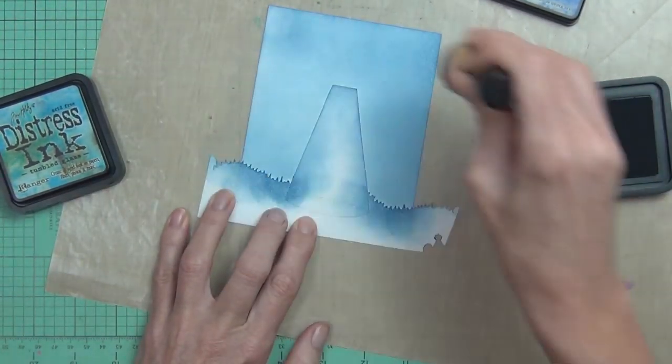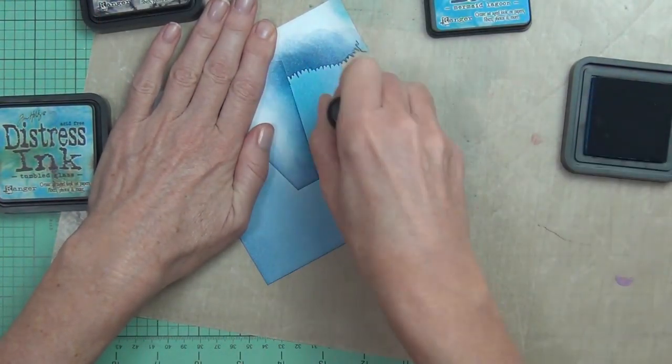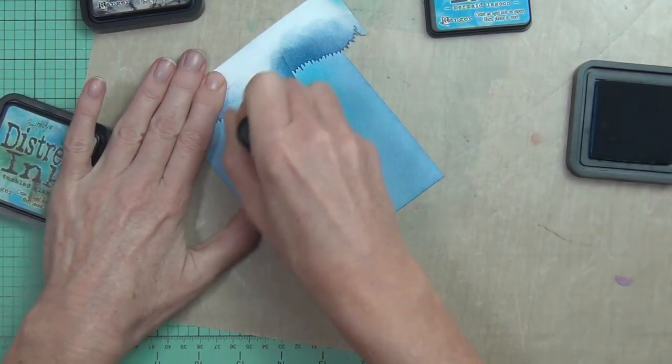I am using my distress inks and the circle blending tool on some Bristol smooth cardstock, as I know that blends out really well.